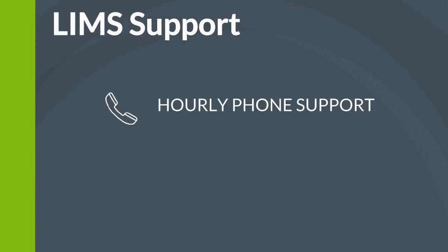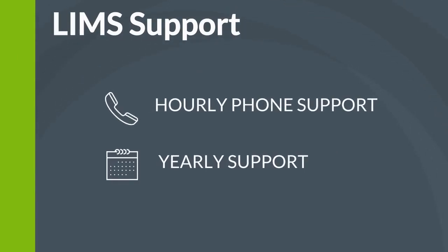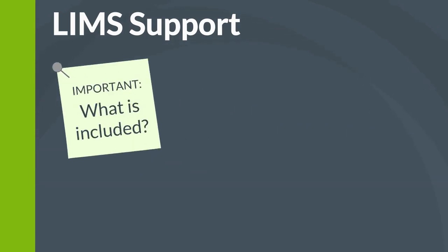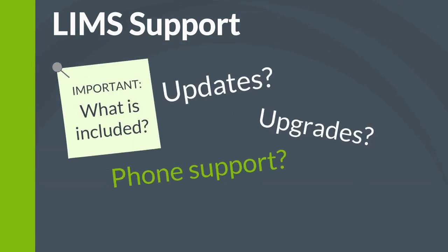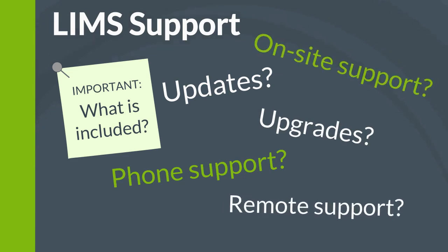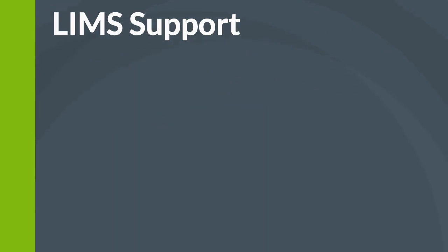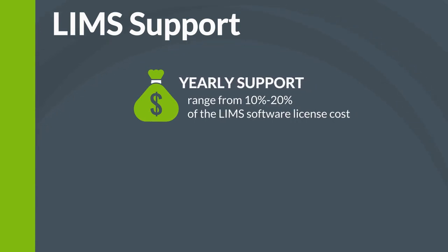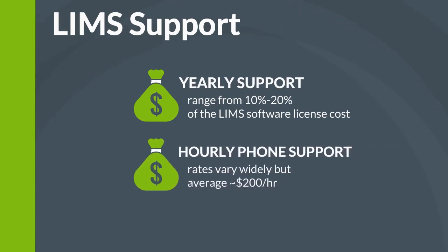LIMS support. LIMS vendors offer a variety of support options and levels, from no-commitment hourly phone support to yearly support contracts. Yearly support contracts are offered in multiple levels. It is important to get a clear understanding of what is included in the level of support contract you are reviewing — does it include updates, upgrades, phone support, remote support, on-site support, and what is the guaranteed issue response and resolution time? The cost of a yearly LIMS support contract can be 10 to 20% of the LIMS software license cost. Hourly phone support rates vary widely but average about $200 an hour.